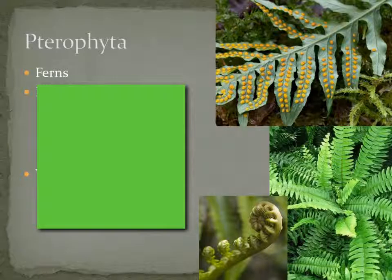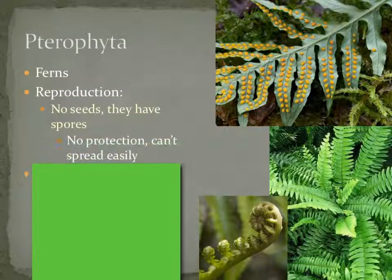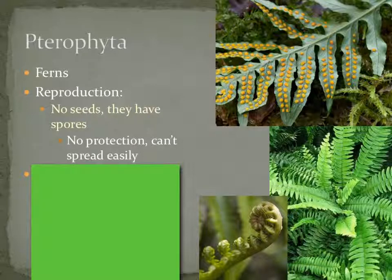The second group of plants we're going to talk about today is division Pterophyta — the P is silent, like in pterodactyl. Pterophyta — these guys are ferns. And the first key characteristic is these guys still do not have seeds; we're still in the seedless plants. But they have spores.